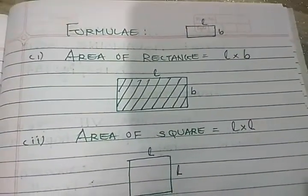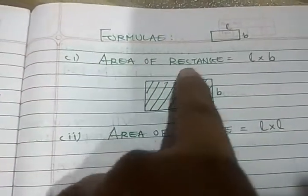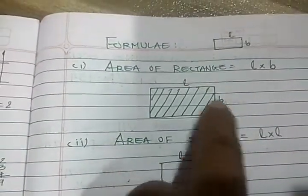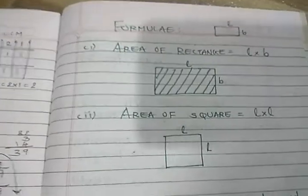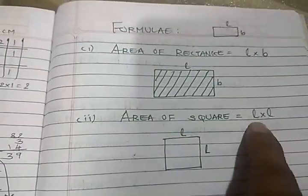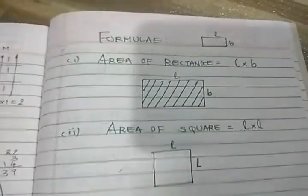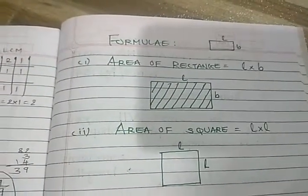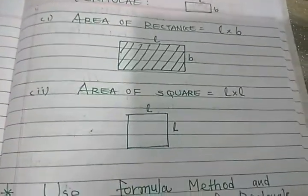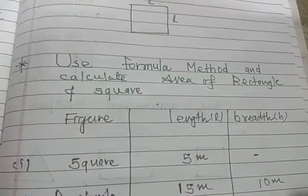Next topic: formulas for area. Area of rectangle equals length multiplied by breadth (L × B). Area of square equals L multiplied by L (L²). Remember: perimeter of square is 4 into L, perimeter of rectangle is 2 into (L + B), while area of rectangle is L into B and area of square is L into L. Please keep these differences in mind.